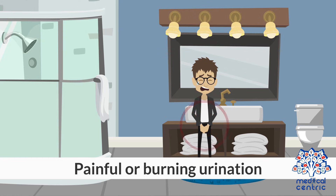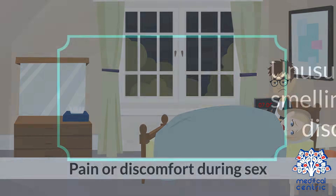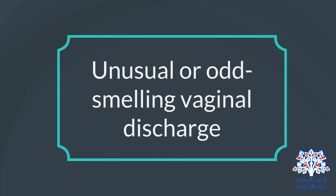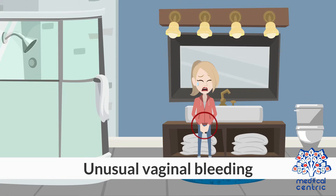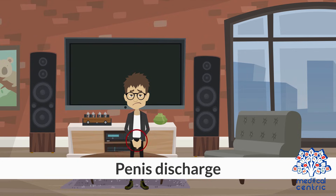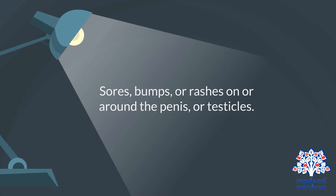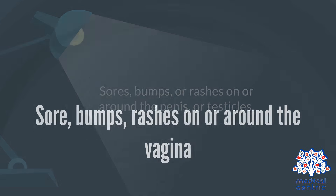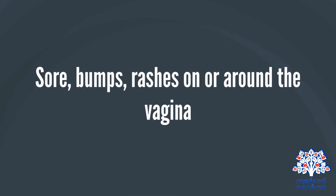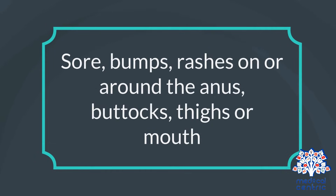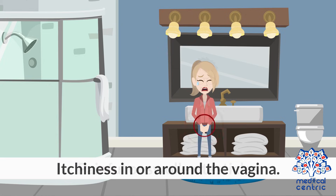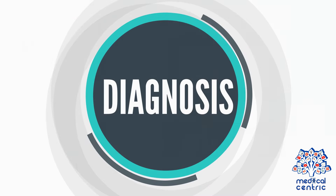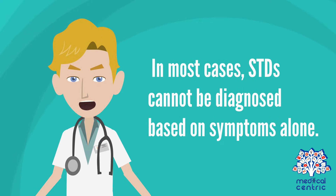Symptoms include painful or burning urination, pain or discomfort during sex, unusual or odd-smelling vaginal discharge, fever, lower abdominal pain, unusual vaginal bleeding, penis discharge, sores or bumps or rashes on or around the penis, testicles, vagina, anus, buttocks, thighs, or mouth, painful or swollen testicles, and itchiness in or around the vagina.